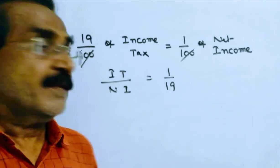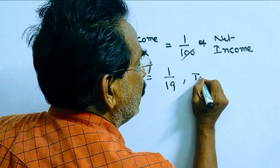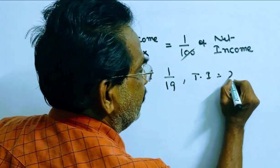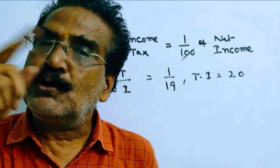So friends, this is income tax, this is net income. The total income is equal to 1 plus 19, which is 20. Income tax plus net income is equal to total income.